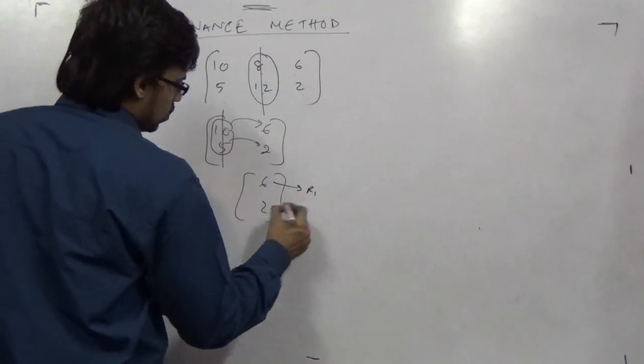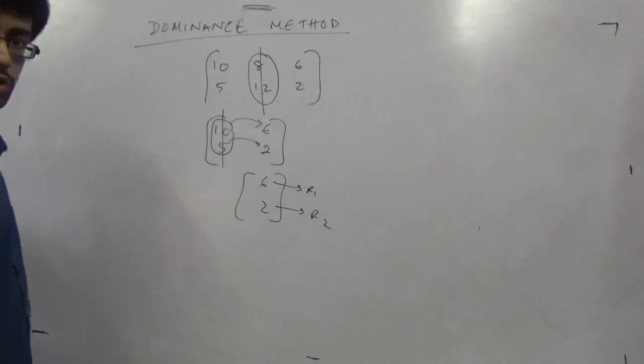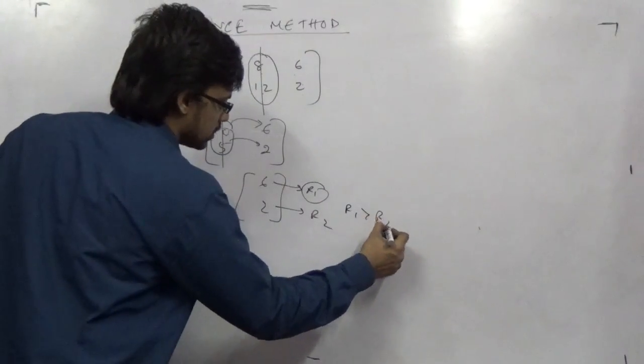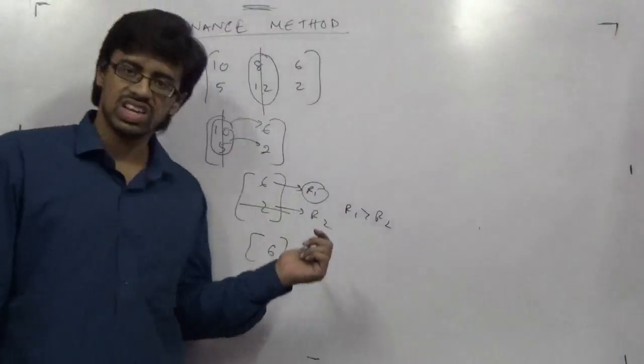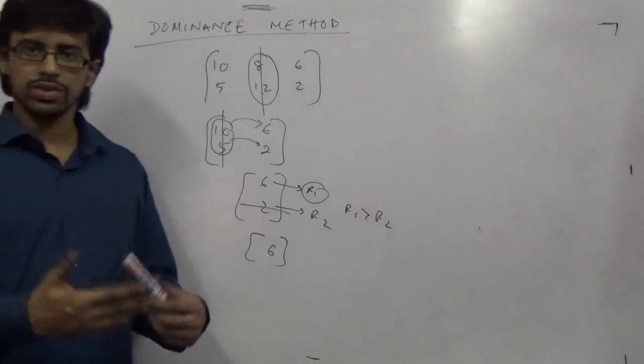Now we have row 1 and row 2. In row they behave rationally, very much rational. So the higher value exists and the smaller will fall. R1 greater than R2, 6 greater than 2, this is gone. So we get a perfect solution that 6 is the answer to this dominance.